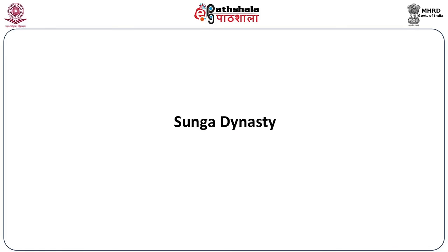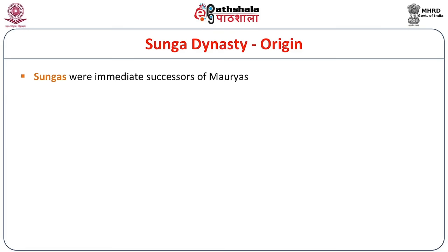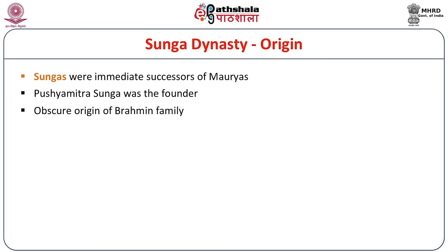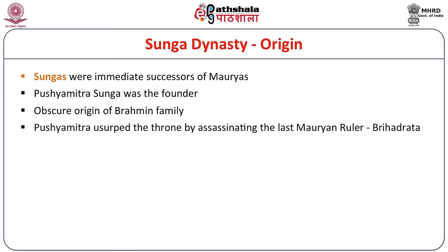The Sungas were the immediate successors of the Mauryas. Pushyamitra Sunga was the founder, of obscure Brahmin family origin. Pushyamitra Sunga usurped the throne by assassinating the last Mauryan ruler, Brihadratha. Ten kings of the family ruled for 112 years.